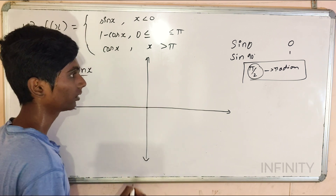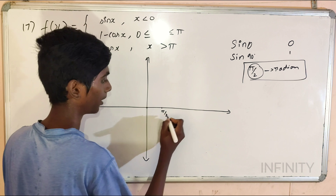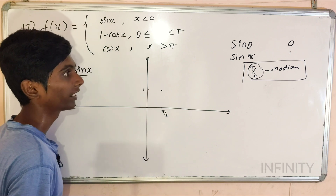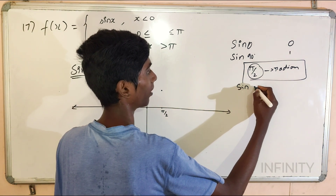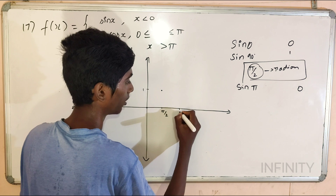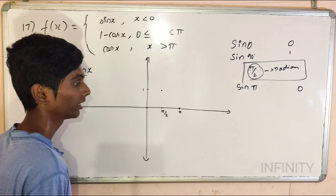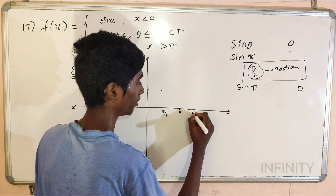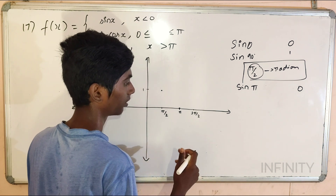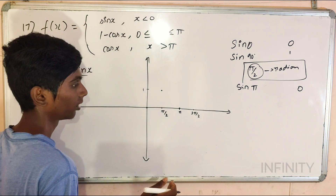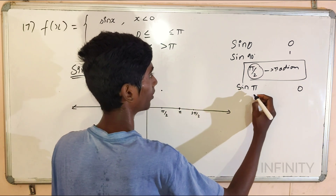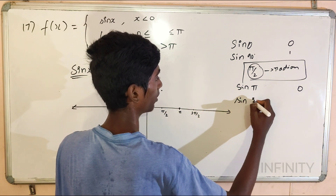Sin 0 is 0. Sin pi by 2 is equal to 1. So, here we have a point. Next, sin pi by 2 is equal to 1. So, here we have a point. Next, sin pi is equal to 0.